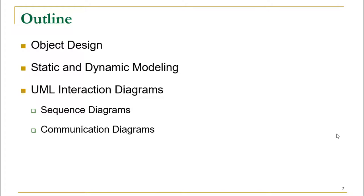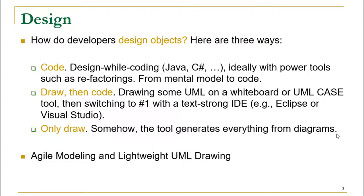For developers there are three different ways to design objects. The first one is to code — they design while coding, do not really use UML, and simply use their mental model to code. An example is where you sit down and think, 'there should be a class called Book,' then keep adding attributes and methods until you have a class ready.